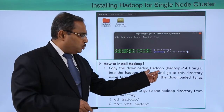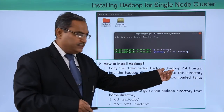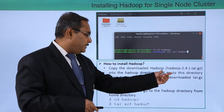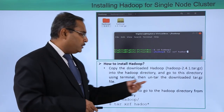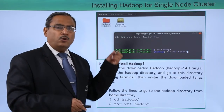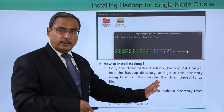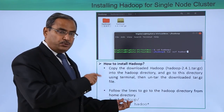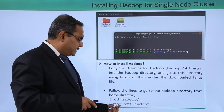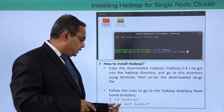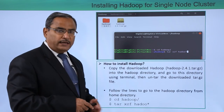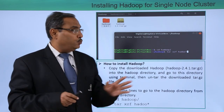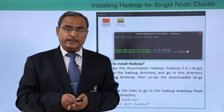Now copy the downloaded Hadoop file — hadoop-2.4.1.tar.gz — from the downloads folder into the Hadoop directory. Then go to the Hadoop directory using the terminal and extract the downloaded tar.gz file. Copy the files from the download folder and place them under the Hadoop folder. Then execute: tar -xzf hadoop-2.4.1.tar.gz for the untar operation. This completes the single node cluster installation of Hadoop. Thanks for watching this video.